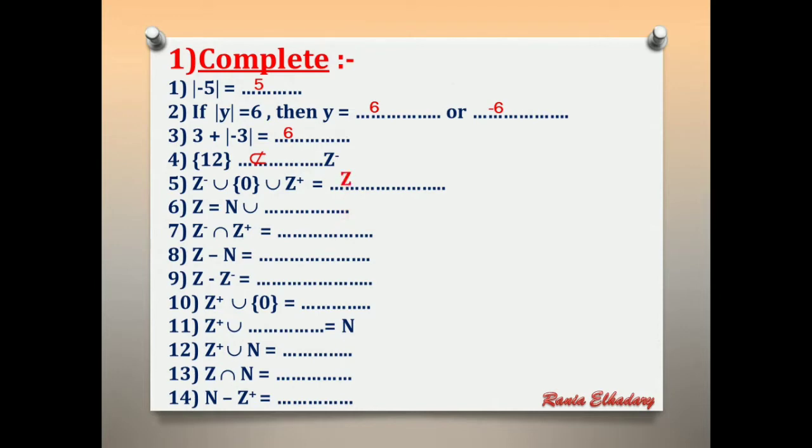Number 6: Z equals N union what? What is the set that, if added to N, we get Z? The answer is Z negative.